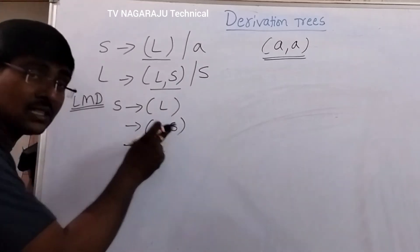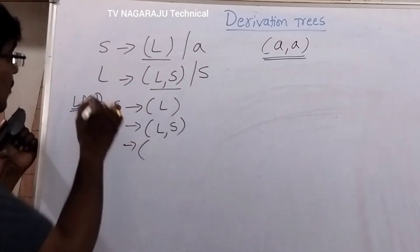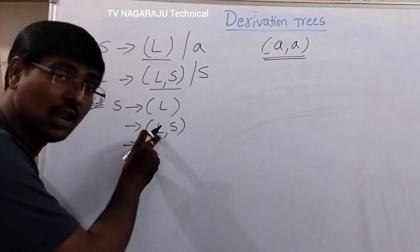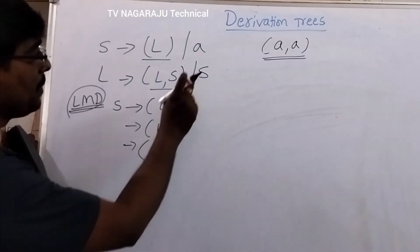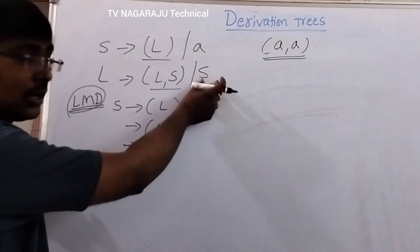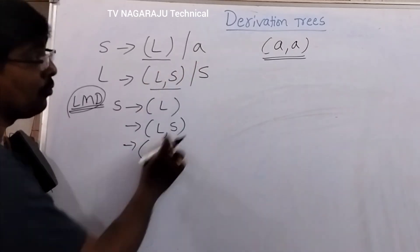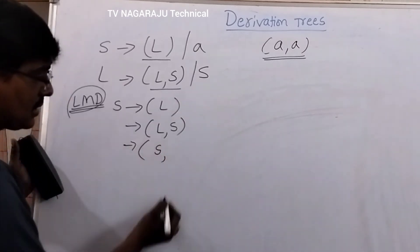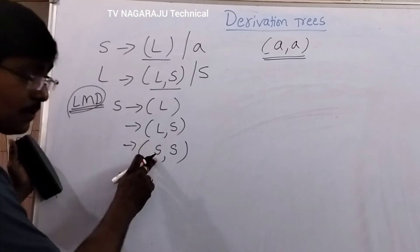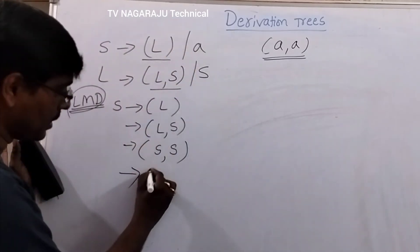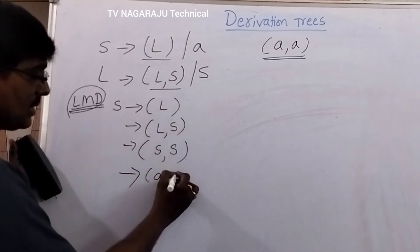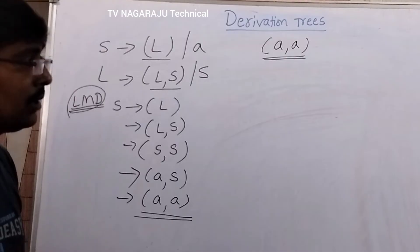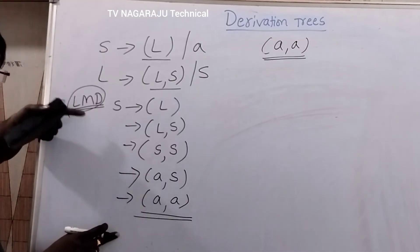Now L is replaced with which production? If we replace L with L,S again, one more comma occurs, but we don't need more than one comma. So L is replaced with S, giving (S,S). In the next step, S is replaced with a, and the other S is also replaced with a. In the next step we get (a,a). Now I got my string. This is the leftmost derivation.